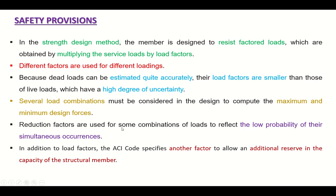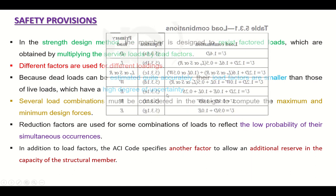The reduction factors are used for some combinations of loads to reflect the low probability of their simultaneous occurrences. For example, it is not possible that the snow is there and also the rain is occurring at the same point and there is a high-speed wind, because with the high speed of wind the snow will melt down and there will be no snow load. So simultaneous occurrence is also considered in the reduction factors. In addition to load factors, the ACI code specifies another factor to allow an additional reserve in the capacity of the structural member.